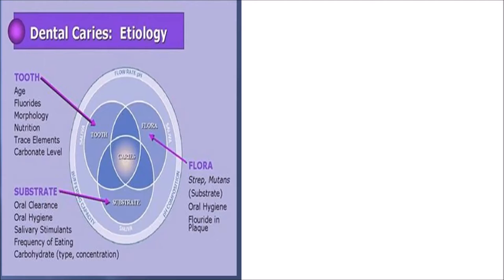The flora is nothing but the microbes which are in your oral cavity, and Streptococcus mutans is that microorganism which causes dental caries. Oral hygiene, which means brushing twice daily, and fluoride in plaque are also very important. The substrate is the food particle which is on the tooth, and oral clearance happens with your saliva, which flushes out the food particles. Proper oral hygiene maintenance and frequency of eating matter — if you keep munching through the day, your caries will be much more.